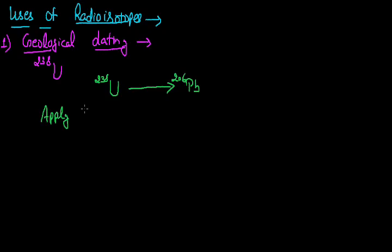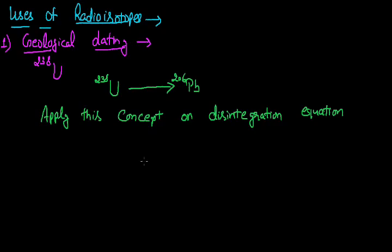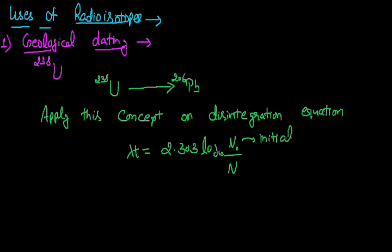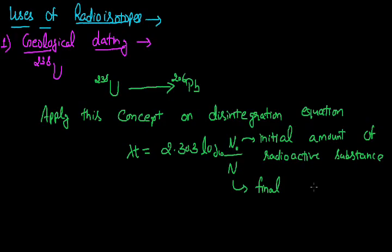If we apply this concept using the disintegration equation: λt = 2.303 × log base 10 (N₀/N). Here, λ is the disintegration constant, t is the time period in which the change occurs, 2.303 is a constant, log is a function, N₀ indicates the initial amount of radioactive substance, and N indicates the final or remaining amount of radioactive substance.